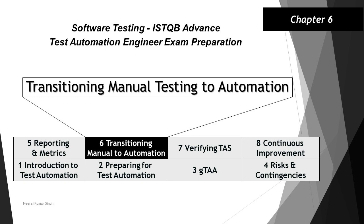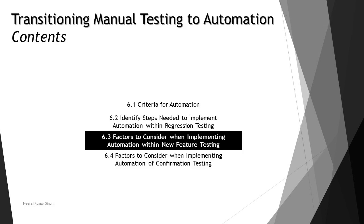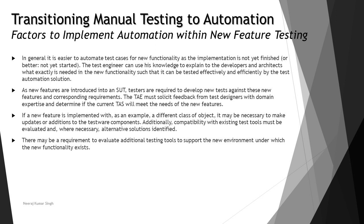Hello friends and greetings for the day. Welcome back to another tutorial on ISTQB Advanced Test Automation Engineer. We are in Chapter 6, looking at the next topic — 6.3: factors to consider when implementing automation within new feature testing. In the previous tutorial we covered the factors required to implement automation within regression testing, and in this topic we'll be talking about new feature testing.